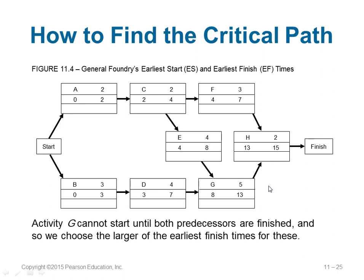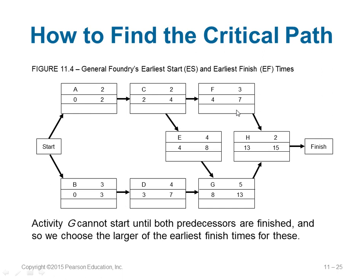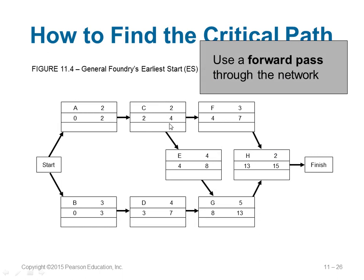H depends on F and G. EF of F = 7, EF of G = 13. H will start at 13 (take the latest EF of any predecessor), so EF of H = 13 + 2 = 15. You can finish the project in 15 weeks. This is called the forward pass — we go from start to finish. Next, to find LS and LF, we do the backward pass: LS = LF − t, and LF equals the smallest LS of the following (successor) activity.